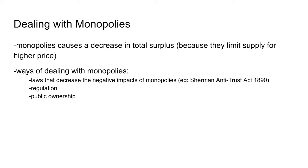Because monopolies create social inefficiencies by selling at a higher price, there are ways we deal with them in our economy. The first is passing laws that regulate the impacts of monopolies, such as the Sherman Antitrust Act of 1890. Other ways of dealing with monopolies are regulation and public ownership.